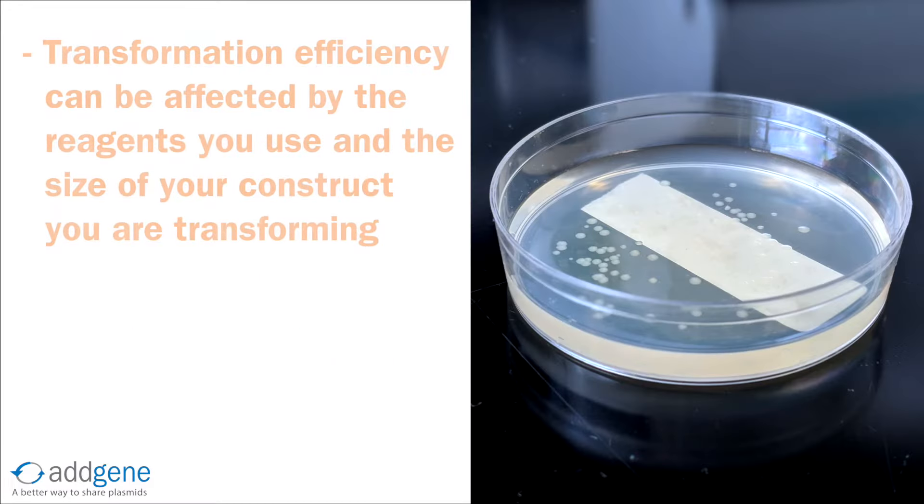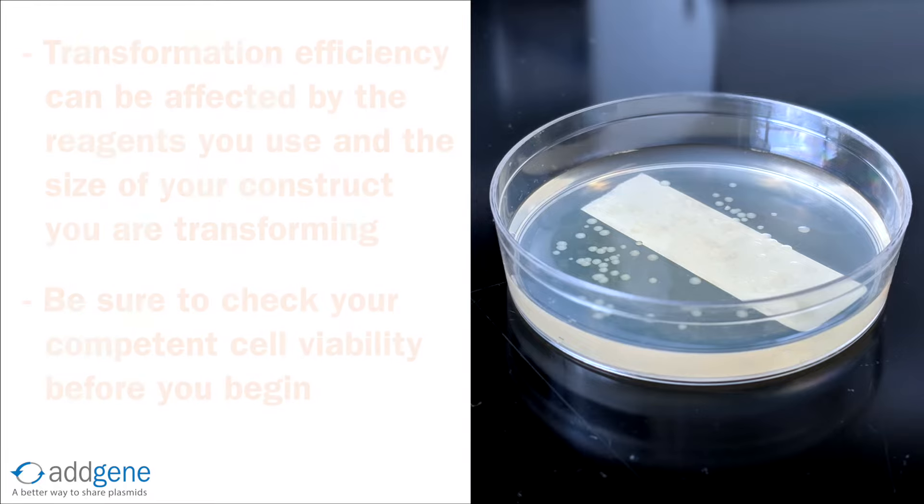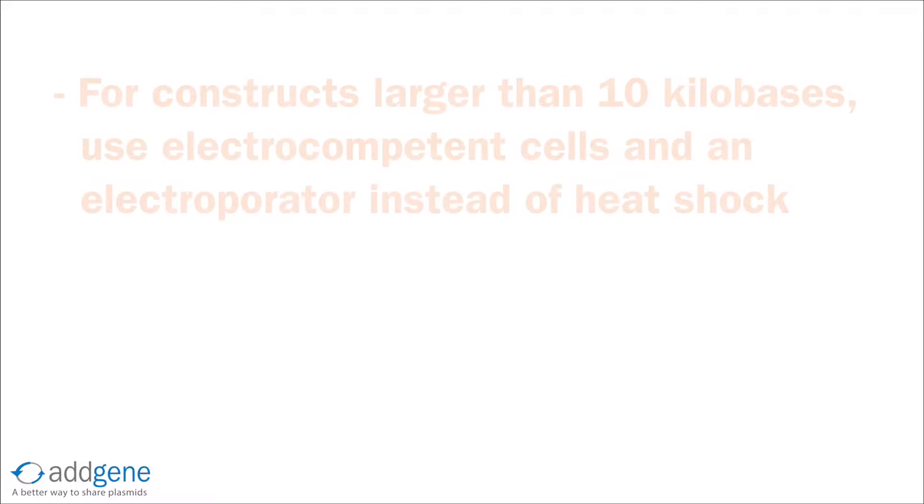You might not always get transformants the first time you try. This could be due to the reagents you use or the size of the construct you are transforming. You should check that your competent cells are still viable and that you use the right antibiotic. If your construct is larger than 10 kilobases, it is a good idea to use electrocompetent cells and an electroporator instead of heat shock.